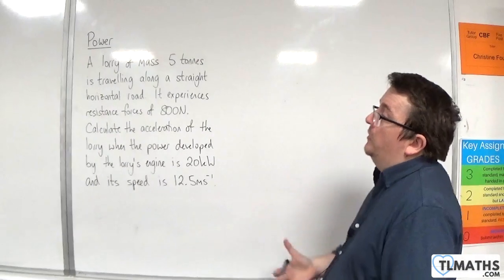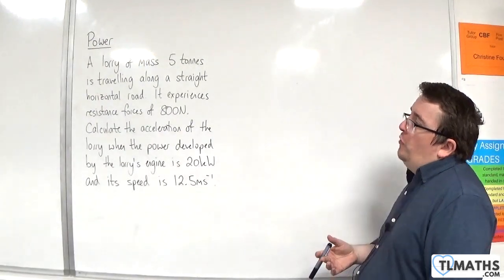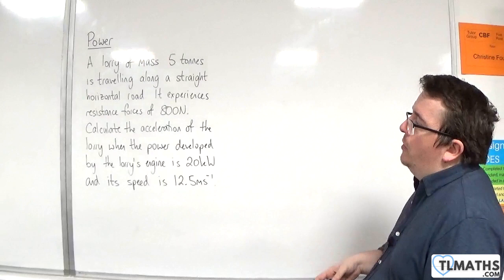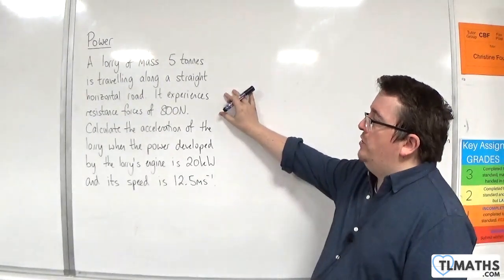So let's take a look at an example. We have a lorry of mass 5 tonnes is travelling along a straight horizontal road. It experiences resistance forces of 800 newtons.